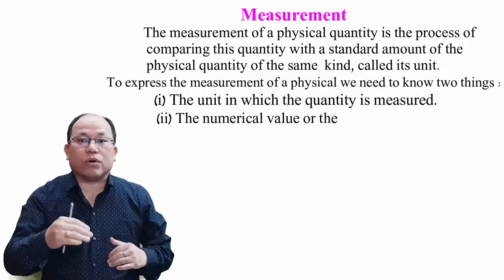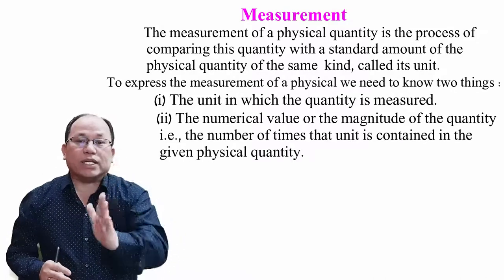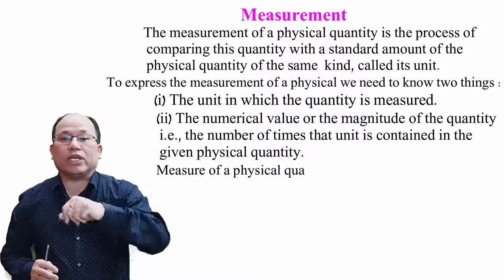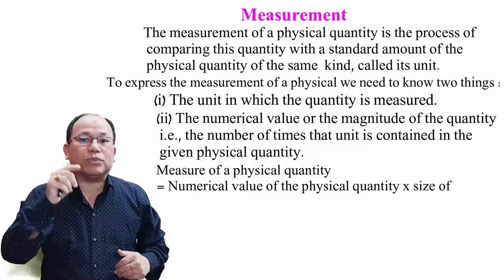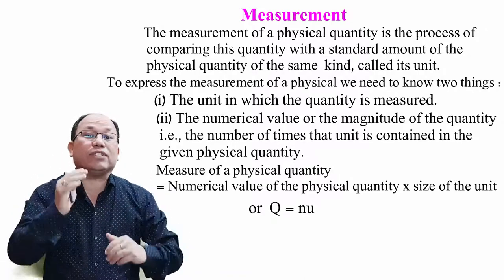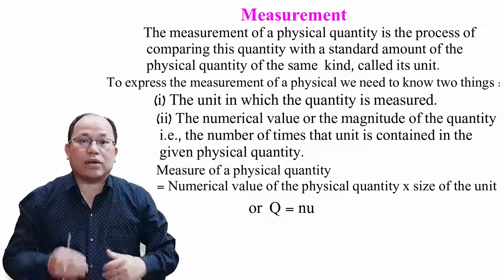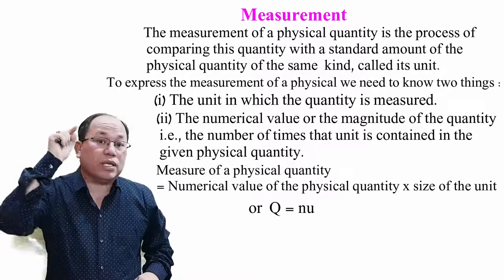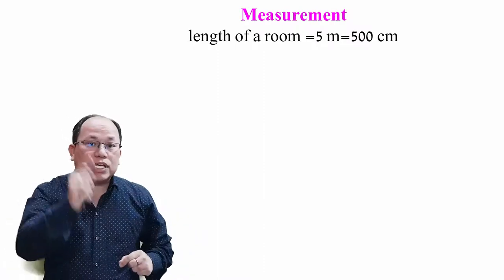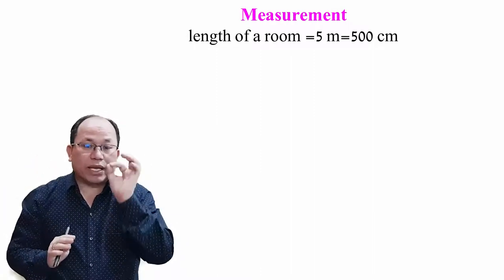To express the measurement of a physical quantity, we need two things: the unit in which the quantity is expressed, and the numerical value — that is, the number of times the unit is contained in the given quantity. Therefore, measurement Q equals numerical value N times the size of the unit U, that is Q = nU.